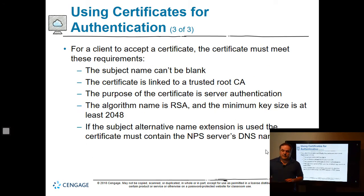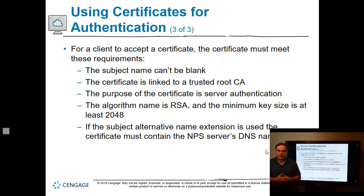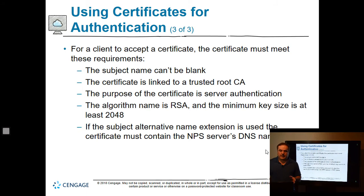For a client to accept the certificate, it must meet several requirements: the subject name cannot be blank, it must be trusted by a root certificate authority in your client's certificate store, and the purpose of the certificate is for server authentication. You've got to use RSA as the algorithm, and the minimum key size is at least 2048. A lot of keys in the past might have been 1024, but we've got to go at least 2048. 4096 is really the preferred way, and as technology moves forward we'll probably go even double that.